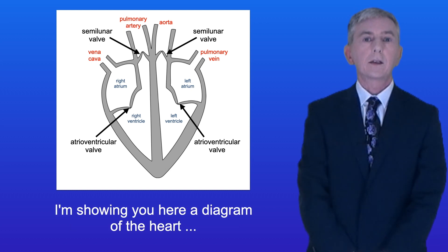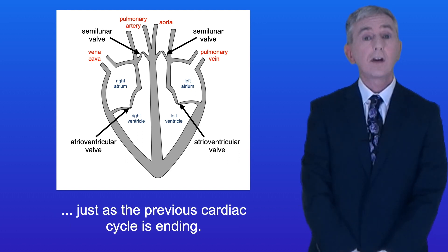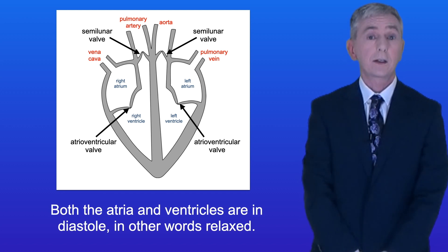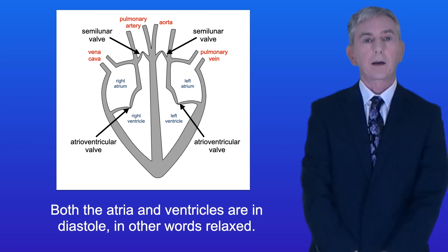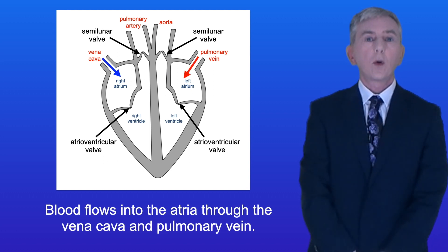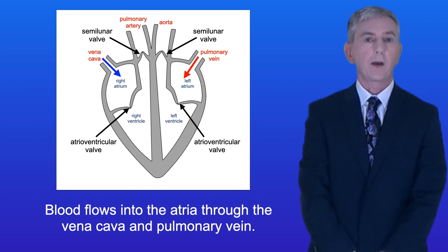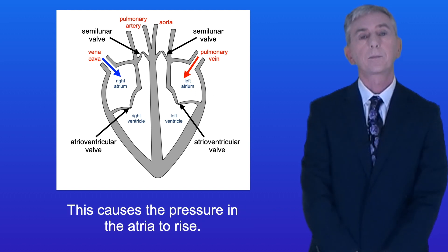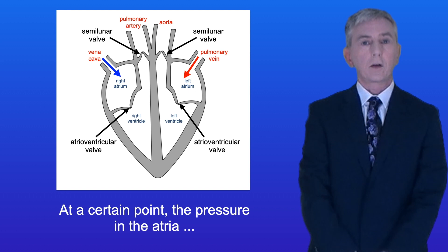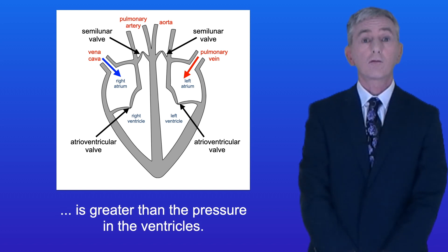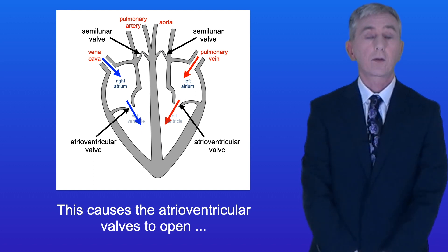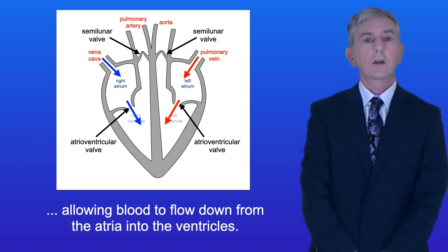Here is a diagram of the heart just as the previous cardiac cycle is ending. Both the atria and ventricles are in diastole, in other words relaxed. Blood flows into the atria through the vena cava and pulmonary vein, causing the pressure in the atria to rise. At a certain point the pressure in the atria is greater than the pressure in the ventricles, causing the atrioventricular valves to open, allowing blood to flow down from the atria into the ventricles.